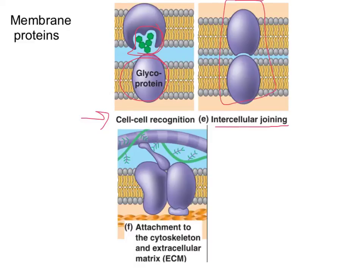Sometimes our cells, especially in a multicellular organism, need to be held together. There are also proteins that hold the cell to the cytoskeleton — binding on the inside to microtubules, microfilaments, and intermediate fibers. In animal cells only, proteins also bind to the fibers in the extracellular matrix, such as fibronectin and collagen. Plant cells do not have that extracellular matrix.